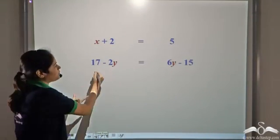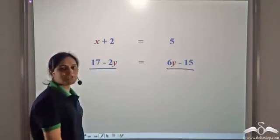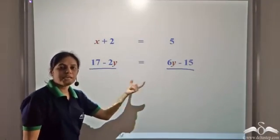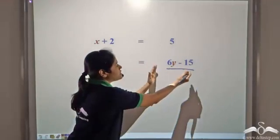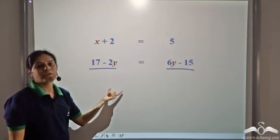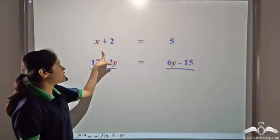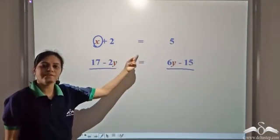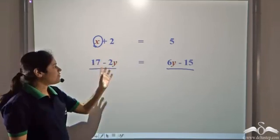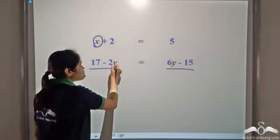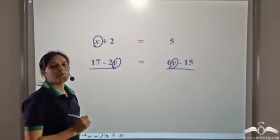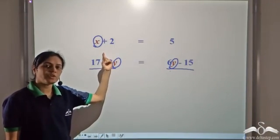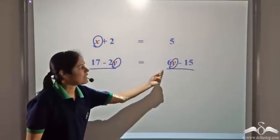What about this next example? This is an expression and even this is an expression, and we have written one equal to the other. Hence, this is also an equation because it states that something is equal to something. In the first equation, we have the variable only on one side of the equal-to sign, whereas in this case we have the variable y on both sides of the equal-to sign. So we can have variables either on one side or on both sides.